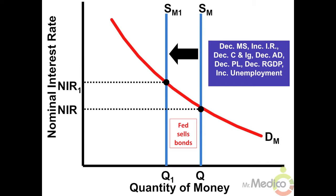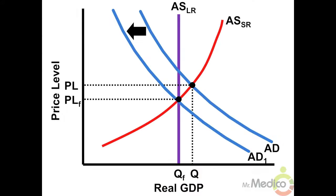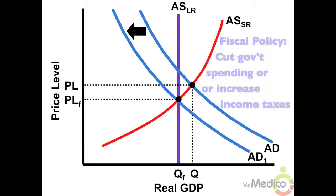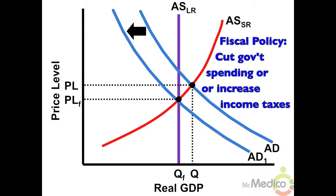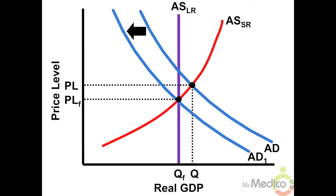The central bank combats high inflation by selling bonds on the open market, which raises interest rates and reduces consumption and investment spending, bringing down aggregate demand in the short run and therefore the price level. A fiscal policy approach would be for the government to cut spending or increase taxes, because that too will reduce aggregate demand and bring down the price level.